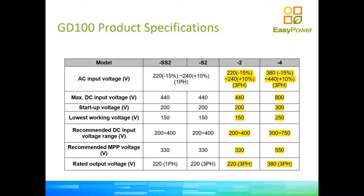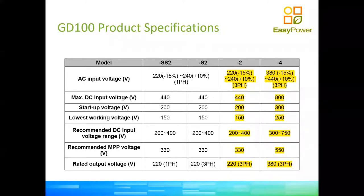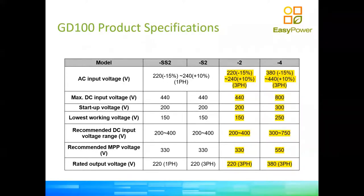On product specifications, there are four different models: SS2, S2, dash-2, and dash-4. The SS2 is for single-phase in and out. Dash-2 is for 220-volt three phase, and dash-4 is for 380-volt in and 380-volt out. You can see the maximum DC input voltage required — for the SS2 without a booster, you need a significantly higher voltage, which may require very long solar strings. This is why the PV booster is beneficial: it takes anything from 75 volts and delivers a fixed 400 volts to the inverter using a buck-boost converter.